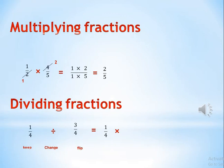We have three steps: keep, change, flip. Keep the first fraction as it is, then change the division sign into multiplication, and flip the second fraction — so three over four becomes four over three. Then ask yourself again: do we have any number in the numerator that can be simplified with a number in the denominator?